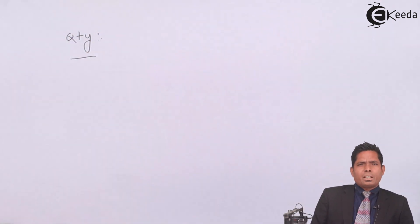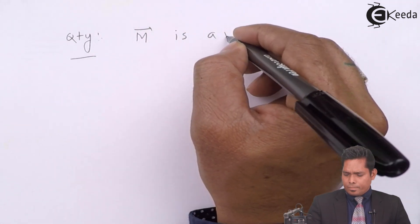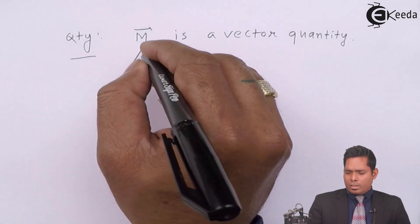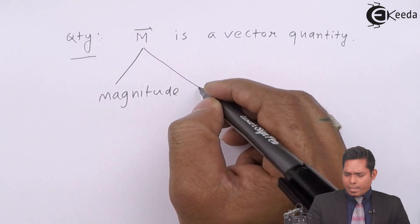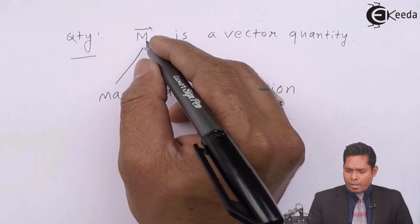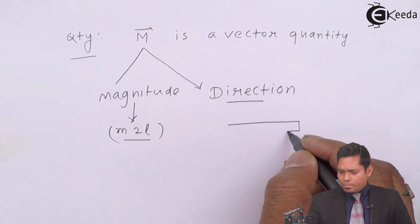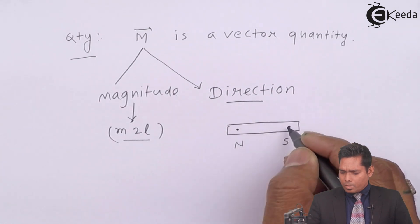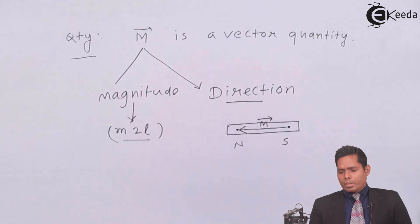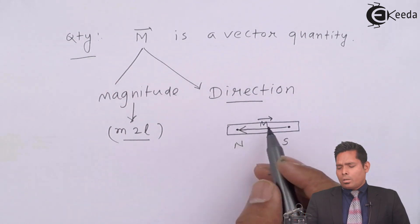The dipole moment is a vector quantity, so it must have both magnitude and direction. The magnitude is m into 2l, which we have already calculated. The direction of the magnetic dipole moment vector is from south pole to north pole — that is, it is directed from south pole to north pole inside the bar magnet.